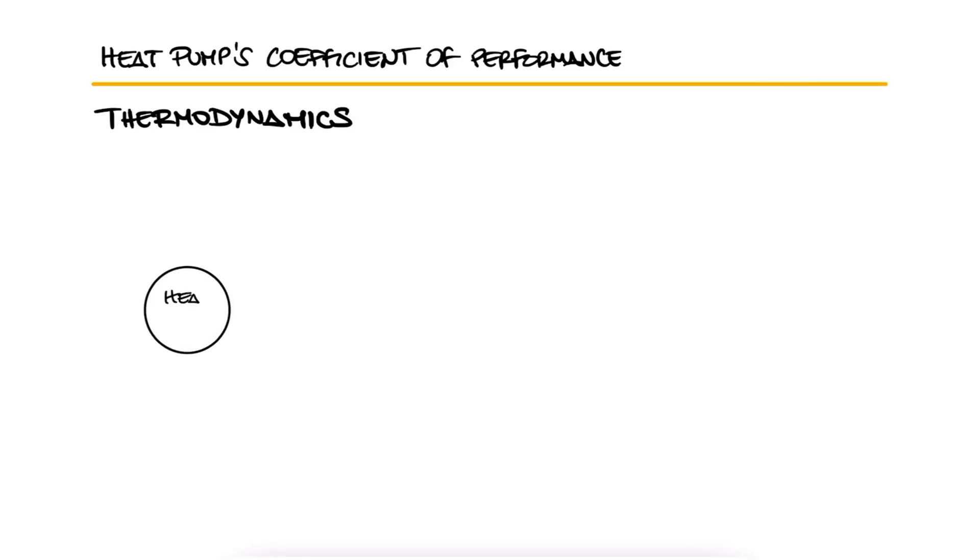A residential heat pump has a coefficient of performance of 2.6. How much heating effect in BTU per hour will result when 4 horsepower is applied to this heat pump? As always, pause here and try solving this yourself before watching the solution.